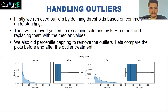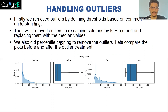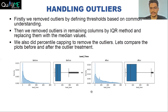For example, for the column children, we know it is very uncommon for any guest to arrive with more than four children. So we kept four as a threshold, and any value in the children column greater than four was replaced by four itself. For the continuous columns, we used the standard IQR method and replaced the outliers by the median values. There were still some outliers left in some columns, so we did percentile capping to treat them. These are the plots before and after treating the outliers. We can see the distribution of lead time before treatment.